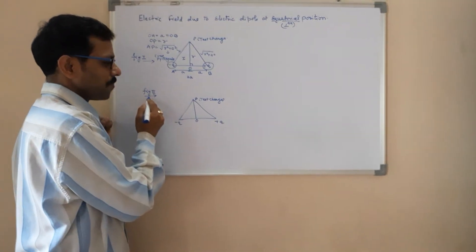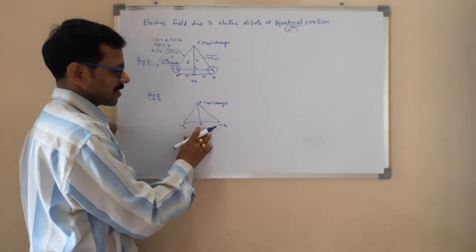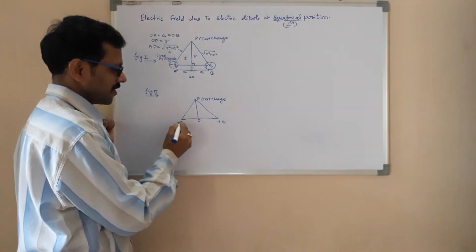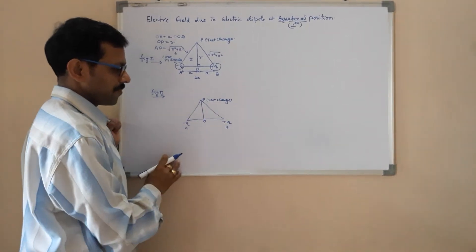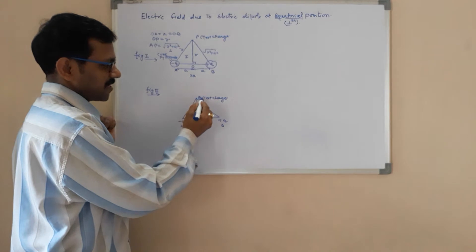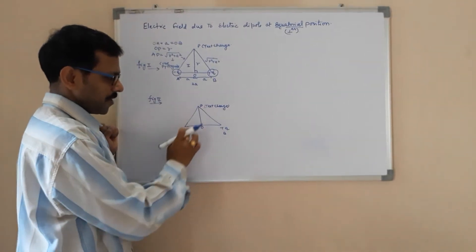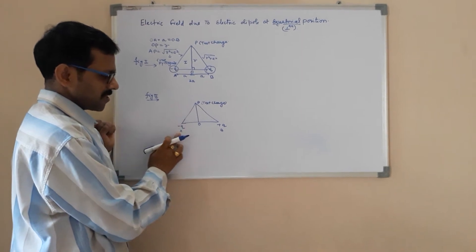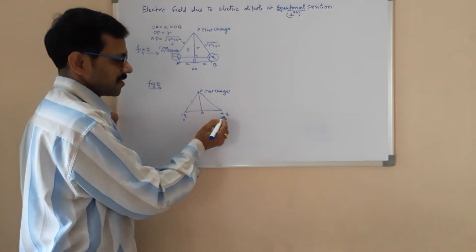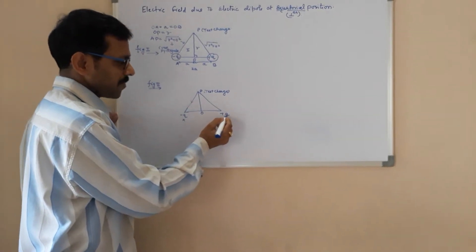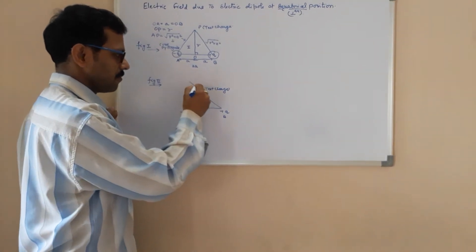If you see in figure 2, this figure will explain you about the direction of the electric field. There is a minus Q charge at point A and there is a plus Q charge at point B. There is a test charge which is positive. The force between the test charge and the charge at A (minus Q) will be towards A, whereas due to point B, the direction of the force as well as the electric field will be away from P.